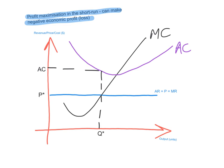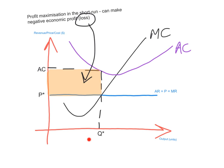This is a situation where the price is lower than average cost. Going up from the MR/MC intersection until you intersect the average cost curve gives you average cost — and as you can see, the firm is making a loss. The loss, shaded in orange, reflects that average cost is higher than price at the profit-maximizing level of output.